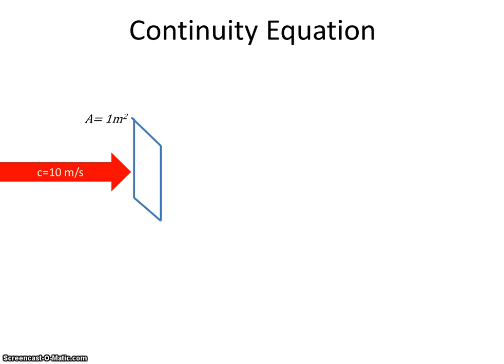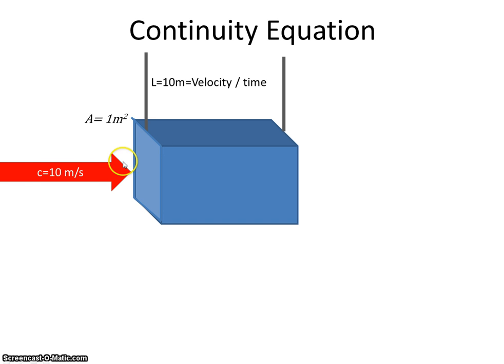Therefore, after one second, the air would have passed through here and would have gone 10 meters. So the volume of air will be 1, cross-sectional area, multiplied by the length, which is really the velocity.